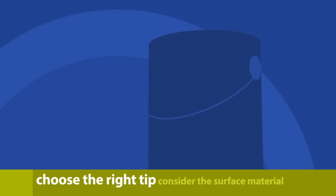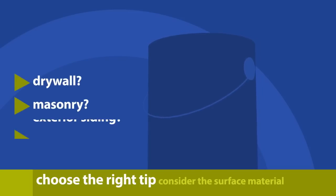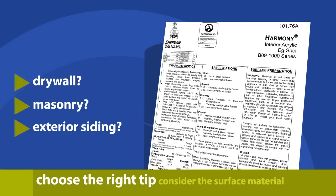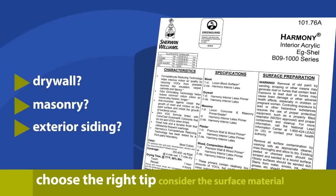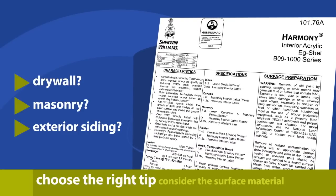What surface is being painted? Drywall, masonry, exterior siding? Consult the coating's product data sheet to ensure the spray tip you select is compatible with the material and the surface you're painting.